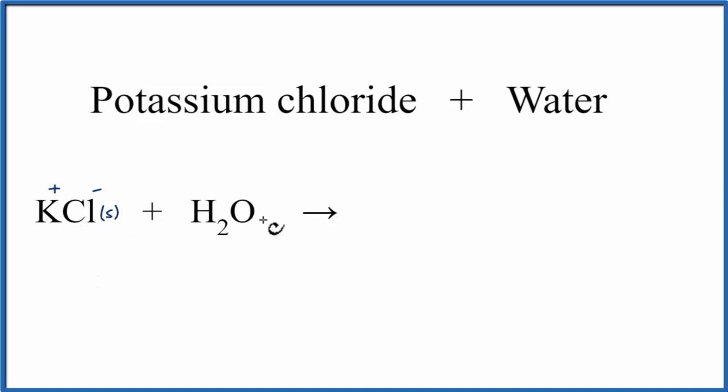We'll take solid KCl, add it to liquid water, and when we do that, it dissolves. It dissociates into the ions. We have K plus, and we have Cl minus.